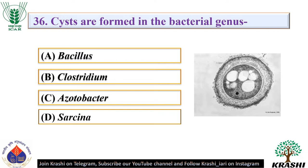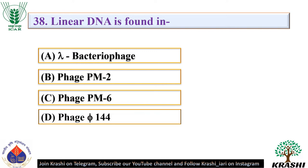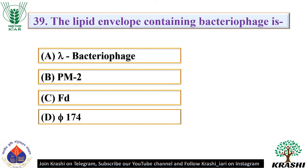Question number 37: Arthrospore forming bacterial genus is. The correct answer is option D — Actinomyces. Question number 38: Linear DNA is found in — it is found in lambda bacteriophage. Question number 39: The lipid envelope containing bacteriophage is. The correct answer is option B — PM2.